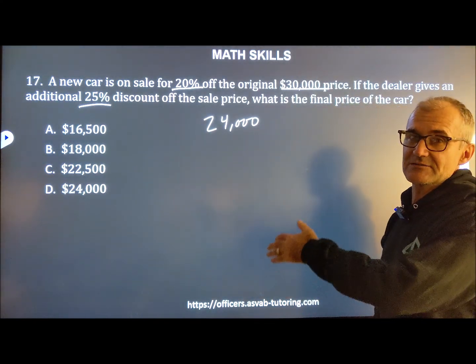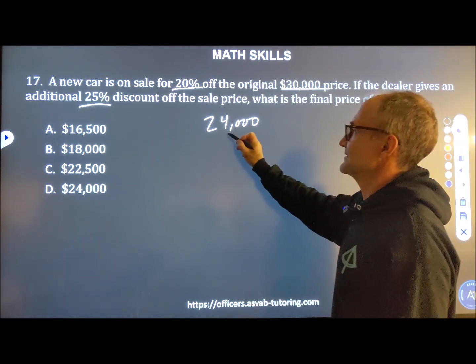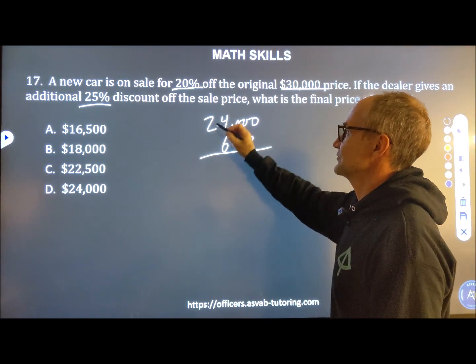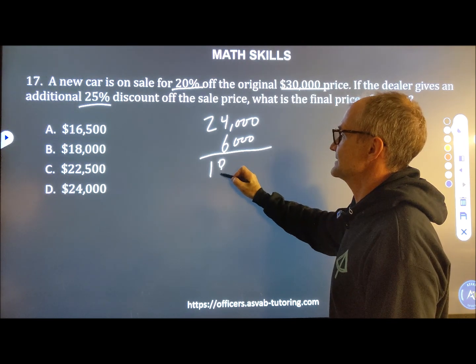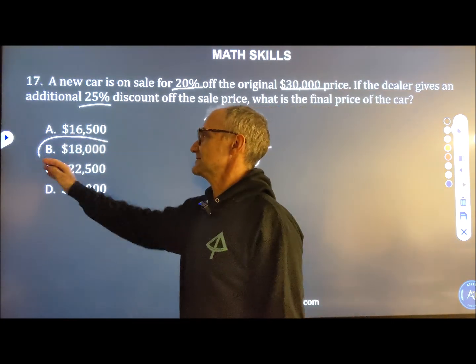And then from 24,000, I remove an additional 25%. Well, half of 24 is 12. Half of that is 6. So I'm going to lose another $6,000 on that 25% discount. 24 minus 6 is 18. And that's going to be the final sale price of the car, $18,000.